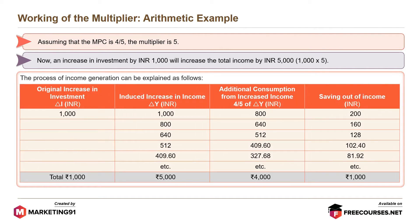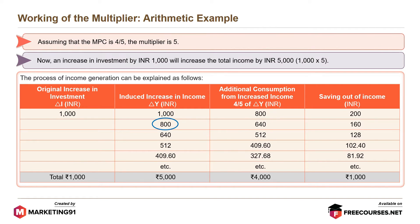Let's understand this process of income generation step by step. From the increased income of Rs. 1000, the consumption MPC equals Rs. 800, i.e., 4/5 of Rs. 1000. Hence, the saving from the income is 1000 minus 800, which equals Rs. 200. Since Rs. 800 is spent on consuming something, it goes back into the system as increase in income. Similarly, of the increased income of Rs. 800, Rs. 640 is spent on consumption, which goes back into the system, and this process carries on until the amount has increased to Rs. 5000.